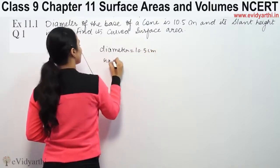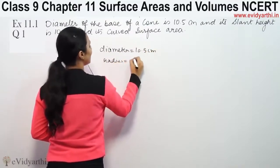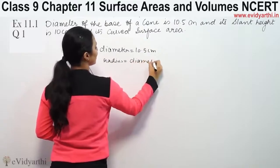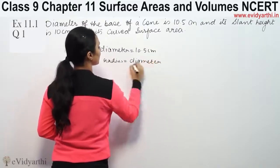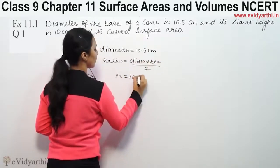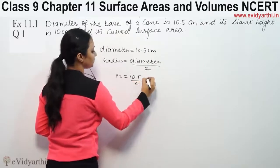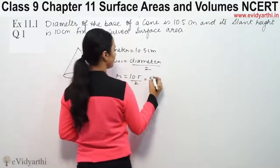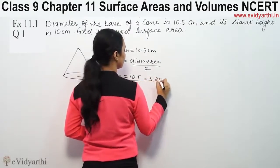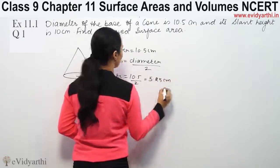To find the radius, we use radius equals diameter divided by 2. So radius is 10.5 divided by 2, which gives us 5.25 cm.